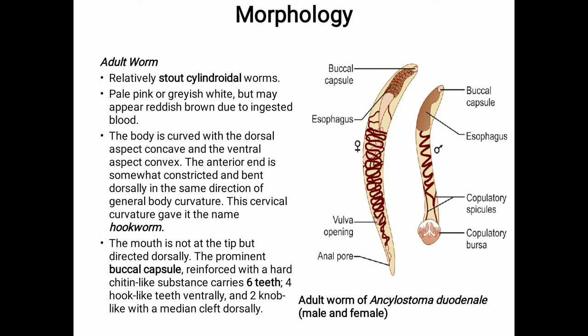Before we move on to the life cycle, we need to know the morphologies of the parasites. In Ancylostoma duodenale, we have the adult worm — which includes the male and female — and we also have the eggs.